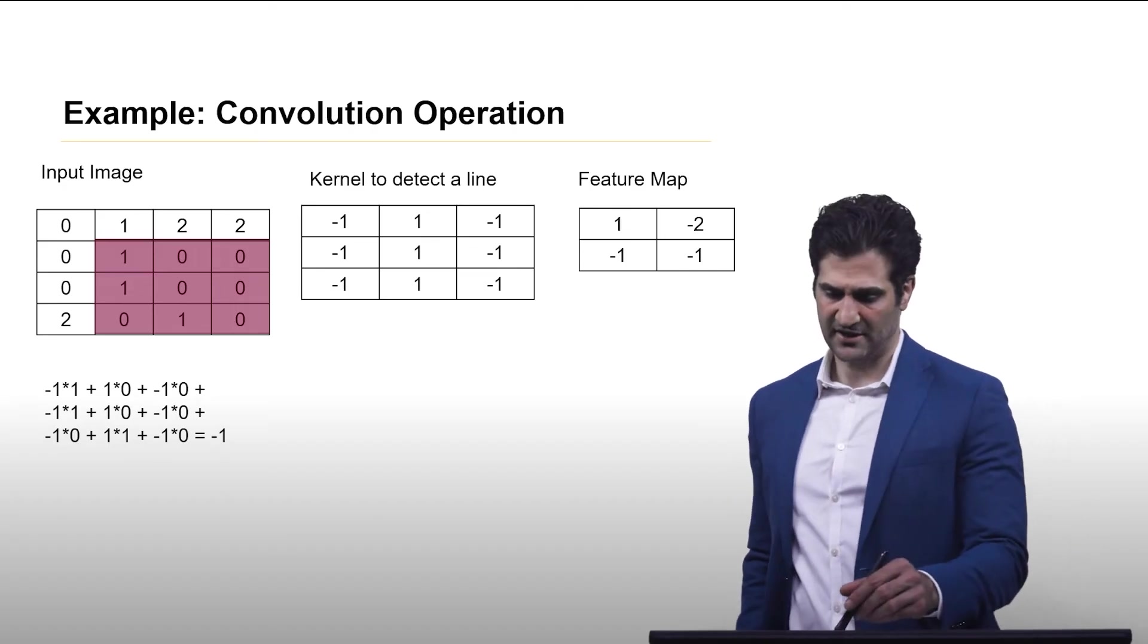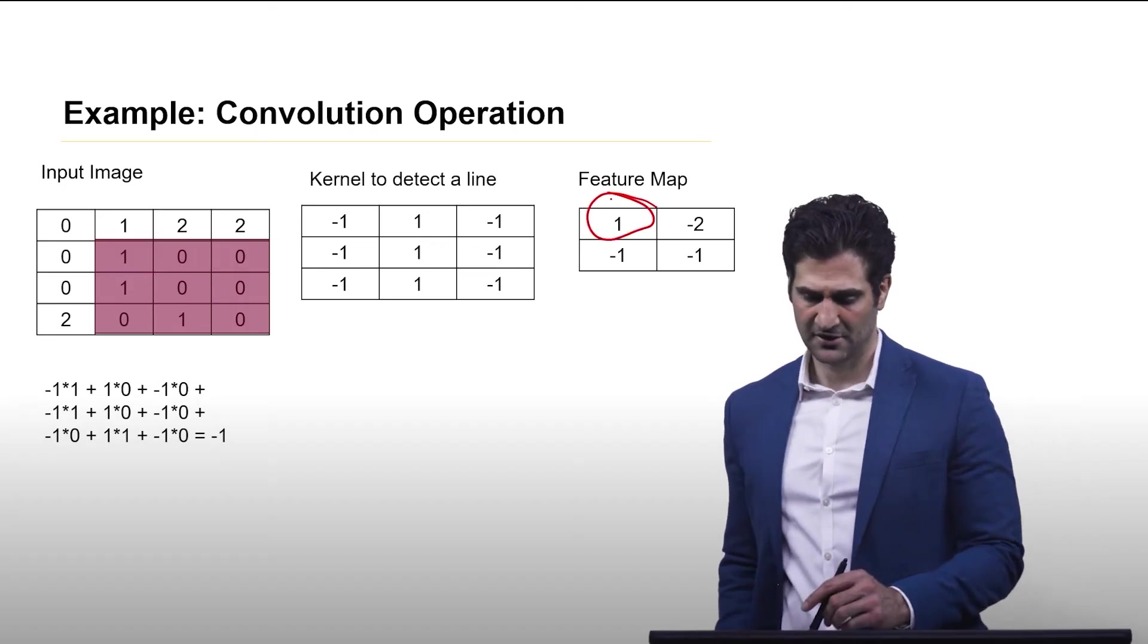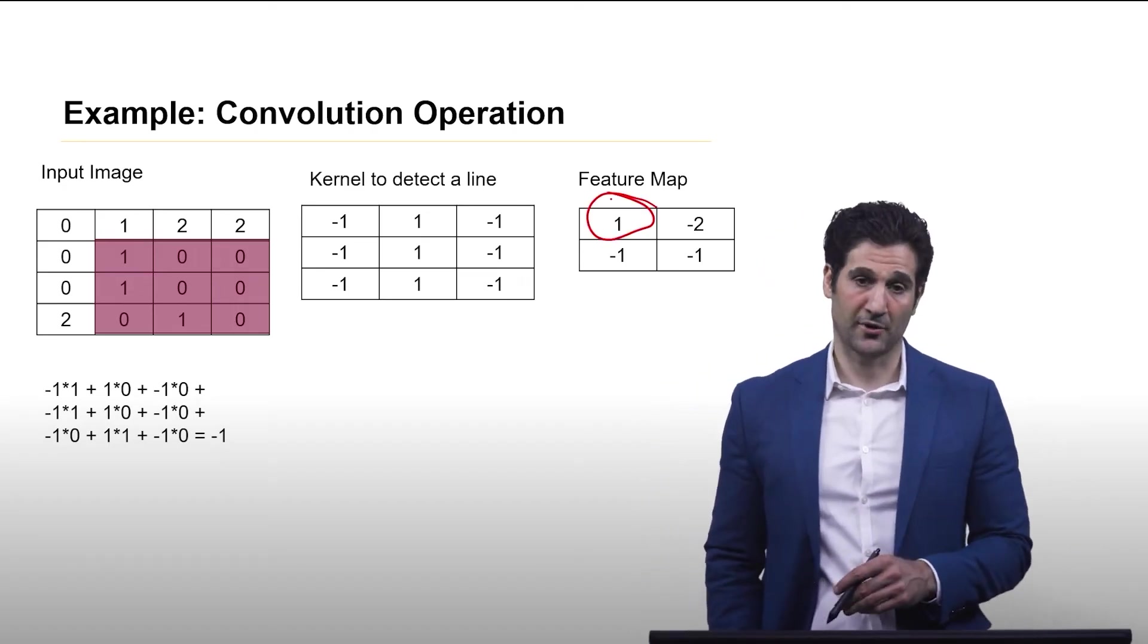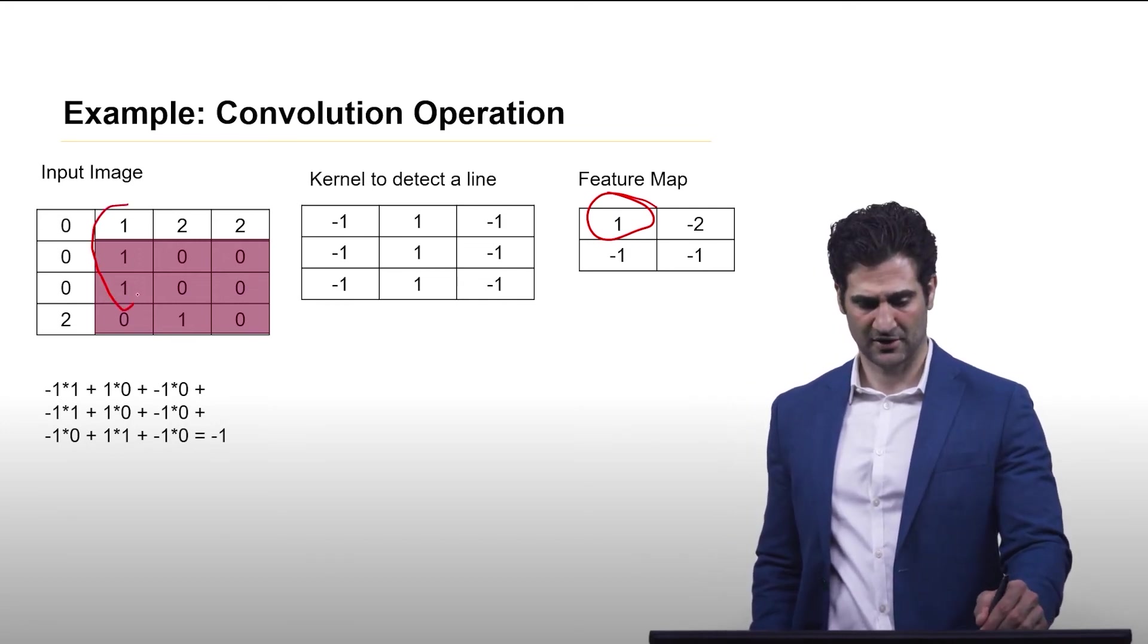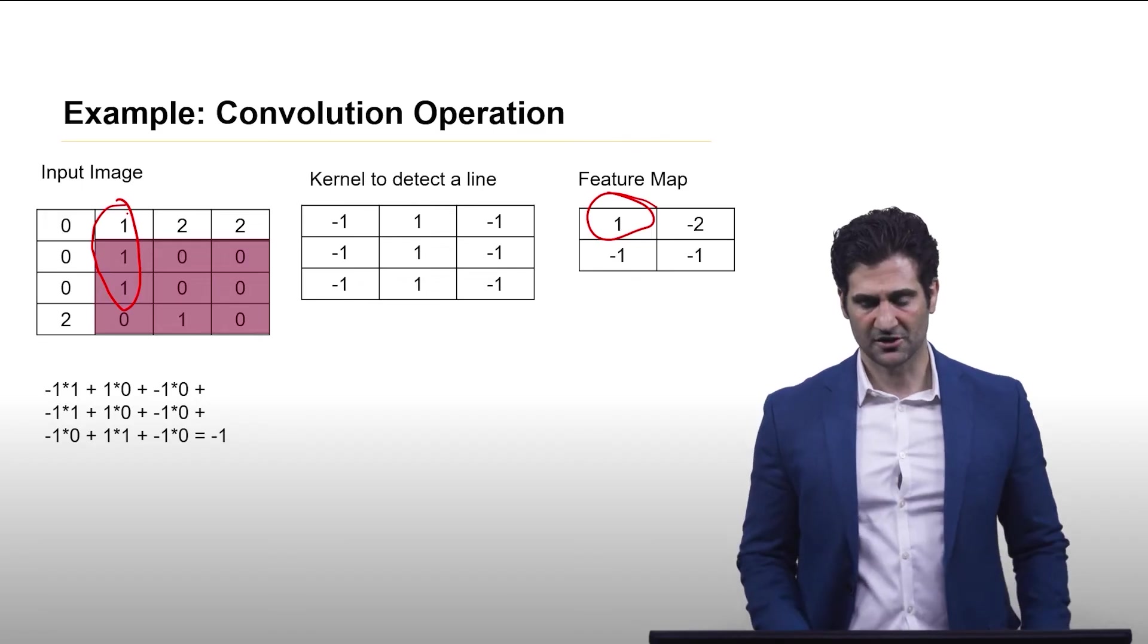So this tells us that this value of 1 means there's a line in the upper left corner. And sure enough, there was a line in the upper left corner. So it makes sense.